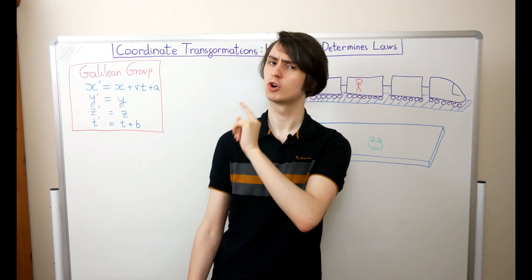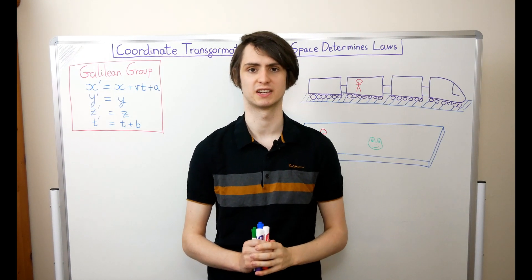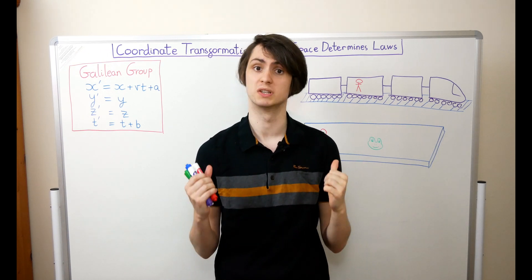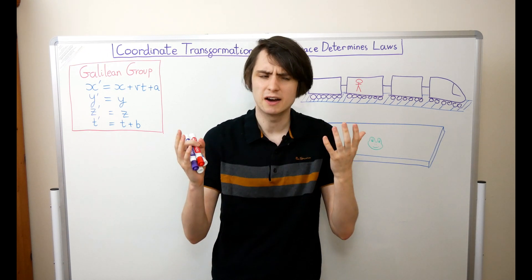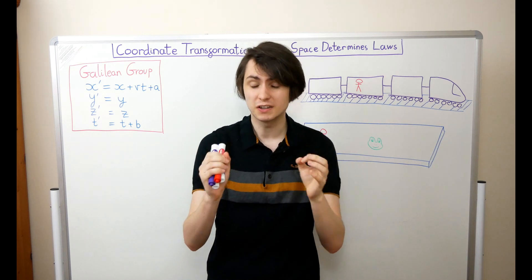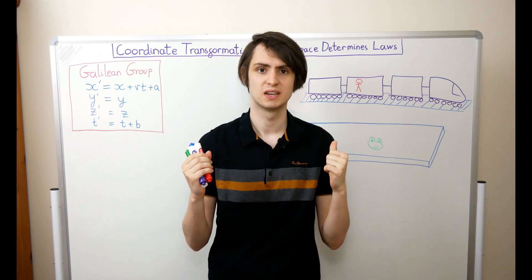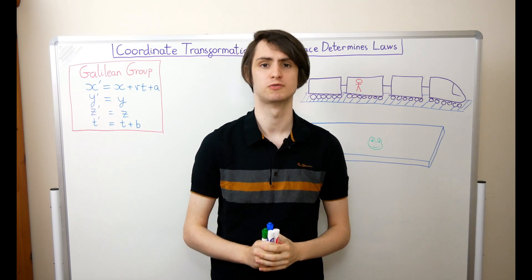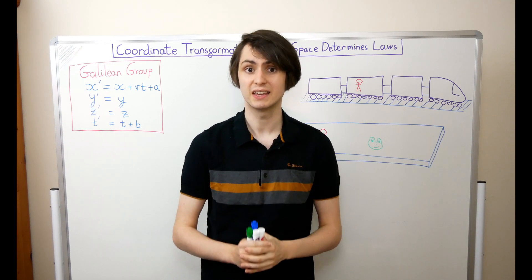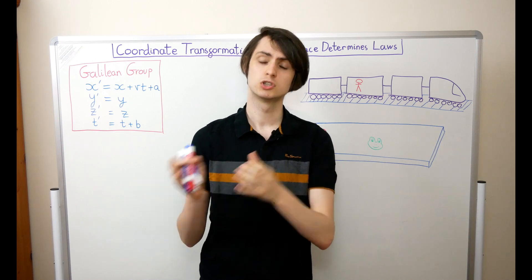Now you might be thinking: how can coordinate transformations possibly be interesting? After all, coordinates are just the way we choose to label the points in our space — how do they have any physical meaning? It turns out there's a fundamental link between coordinate transformations and the very form of the laws of physics themselves. Furthermore, it's this link that's hugely important in the journey from Newtonian mechanics to relativity.